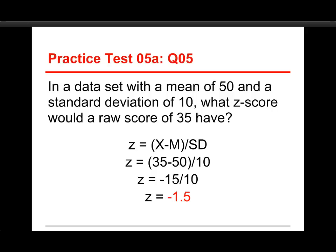And so, in this case, we take the raw score of 35, and we subtract the mean of 50, and we divide it by the standard deviation of 10. So, 35 minus 50 is -15. We divide that by 10, and we get -1.5, and that is our z-score for the raw score of 35, converted to a z-score of negative 1.5.